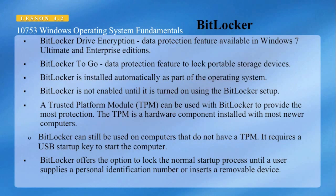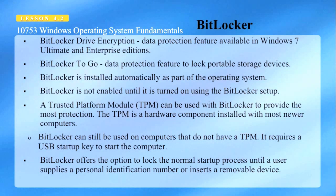EFS works to encrypt files and folders individually. If you want to encrypt your whole volume, you want to use BitLocker. BitLocker Drive Encryption is a data protection feature available in Windows 7 Ultimate and Enterprise Editions. There's a feature called BitLocker to Go, which you can use to encrypt your portable storage devices, such as jump drives or USB external drives.